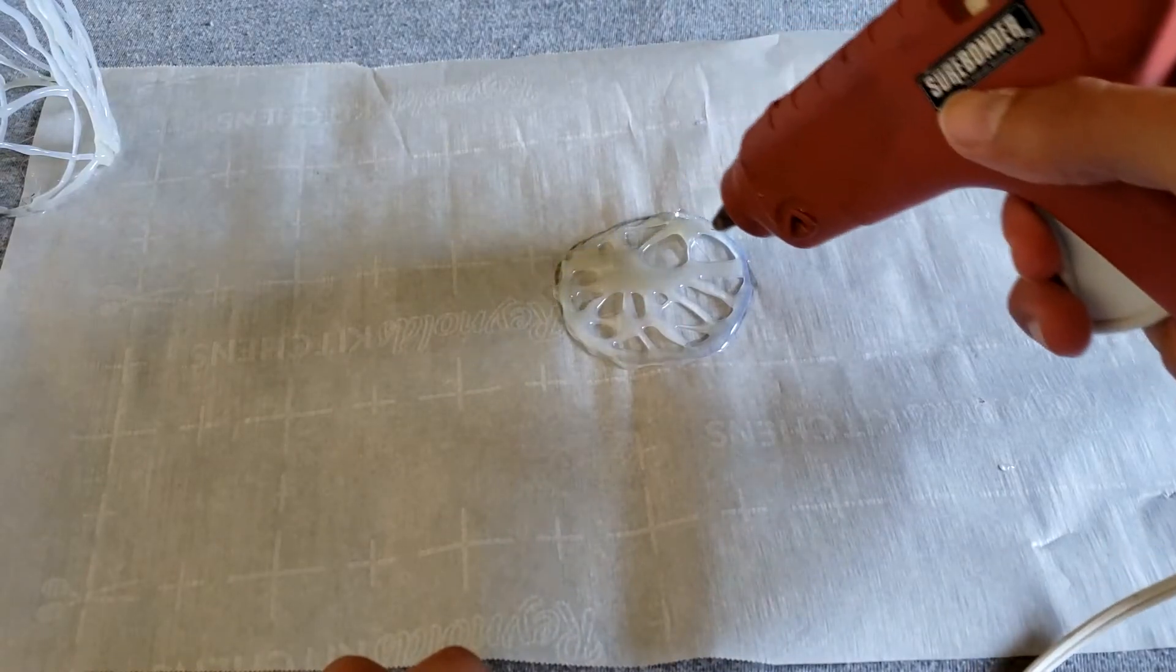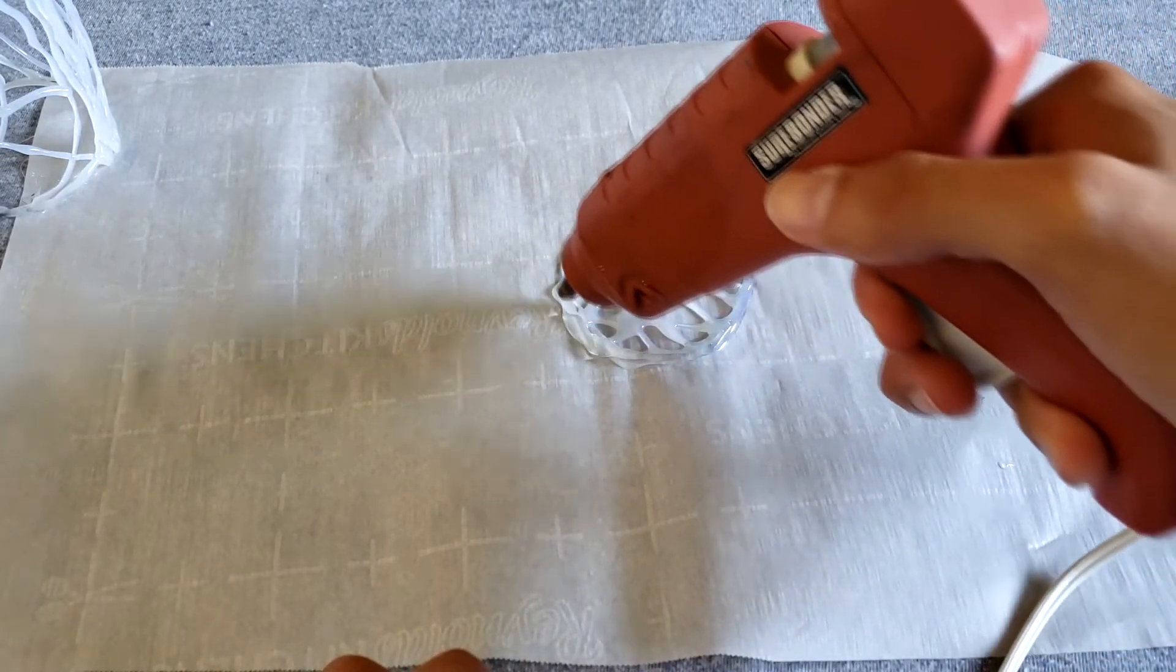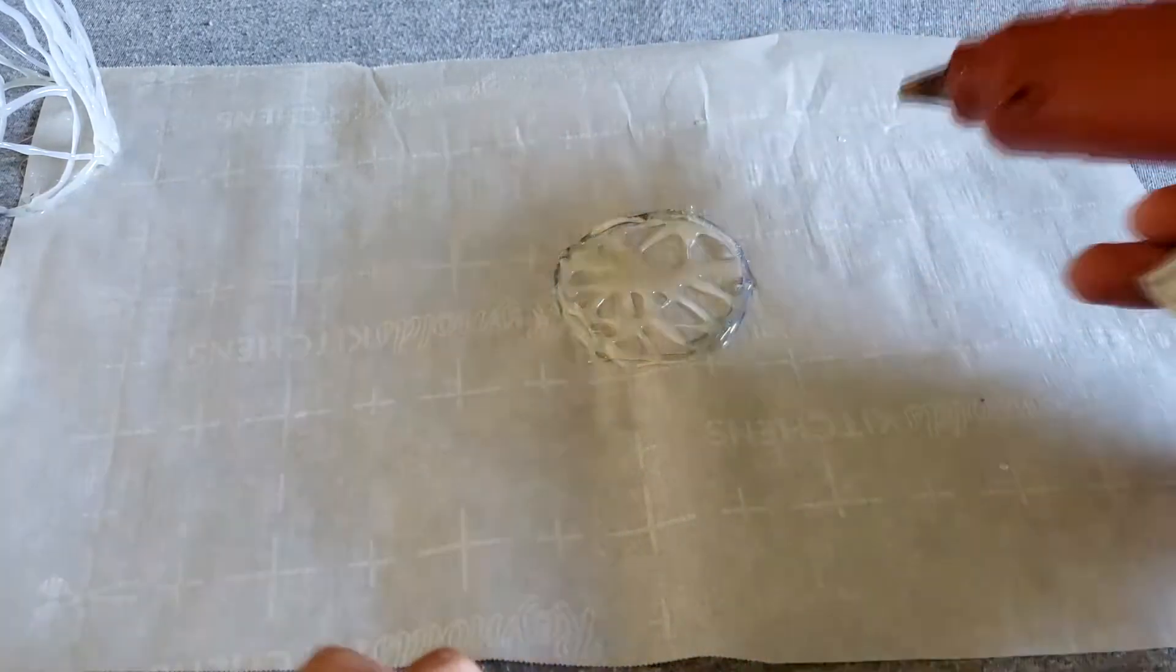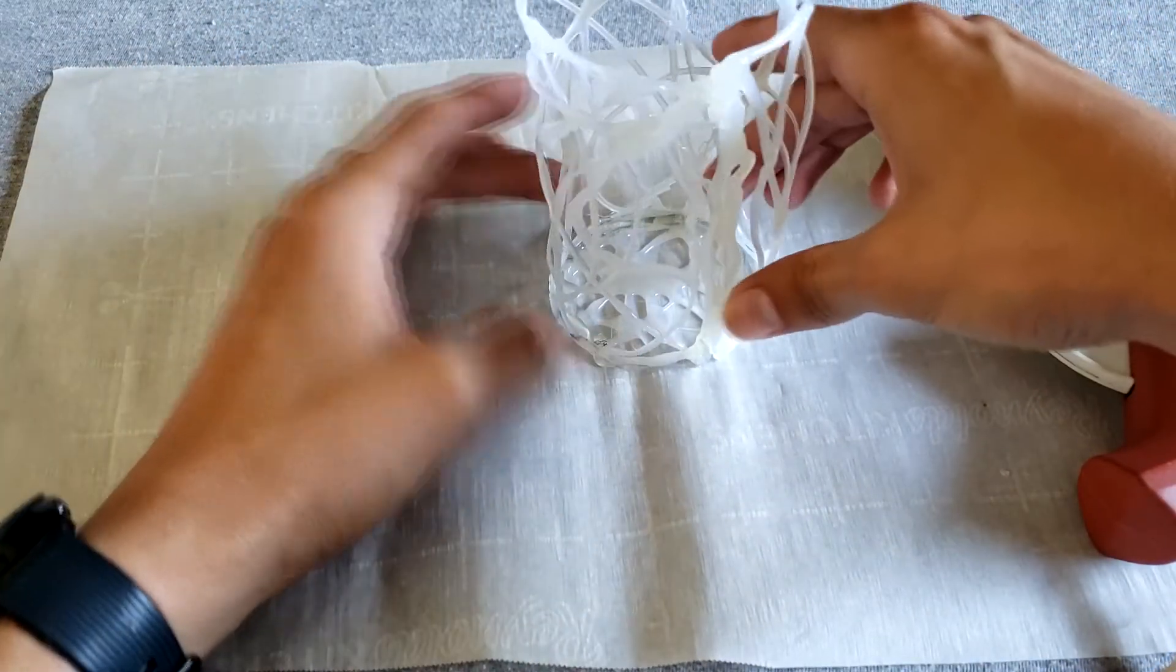Once we've allowed our design to dry, we're going to go over it one more time with our hot glue gun so that we can stick the walls of our candle holder on top.